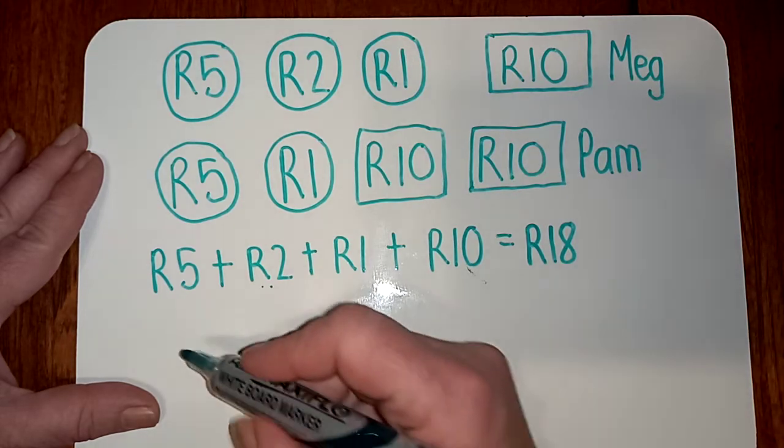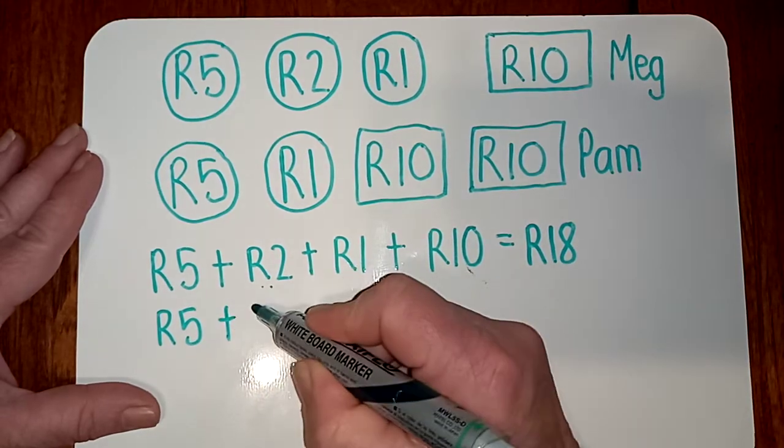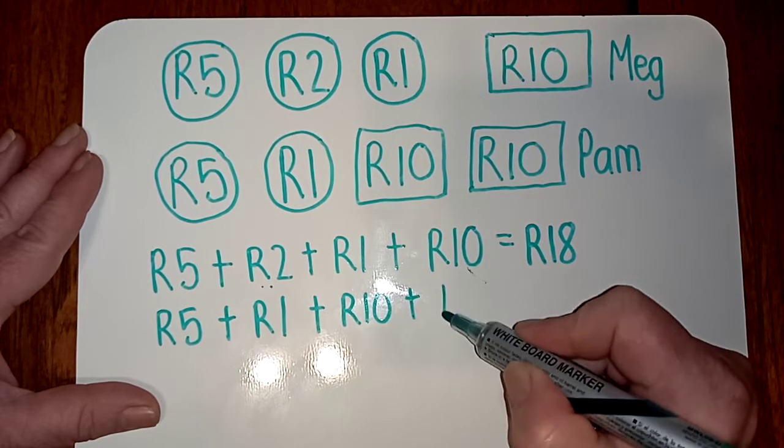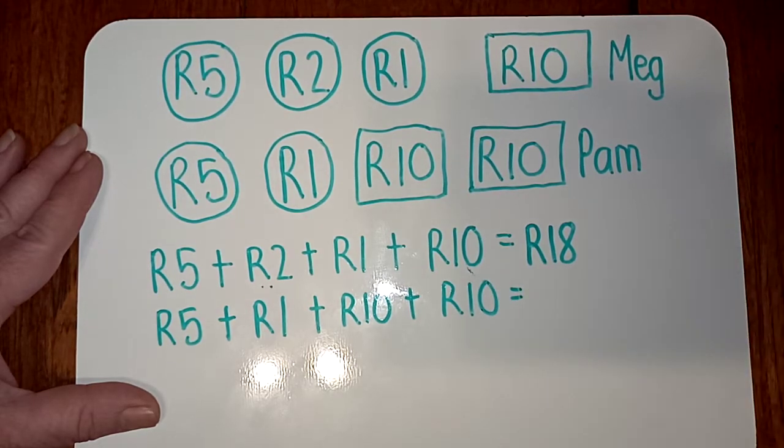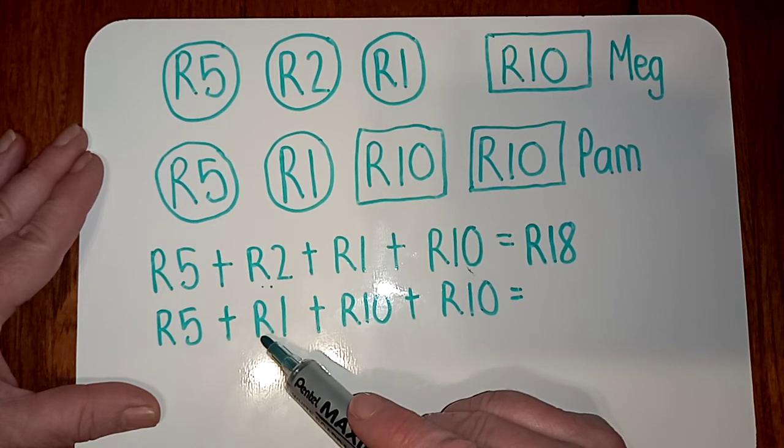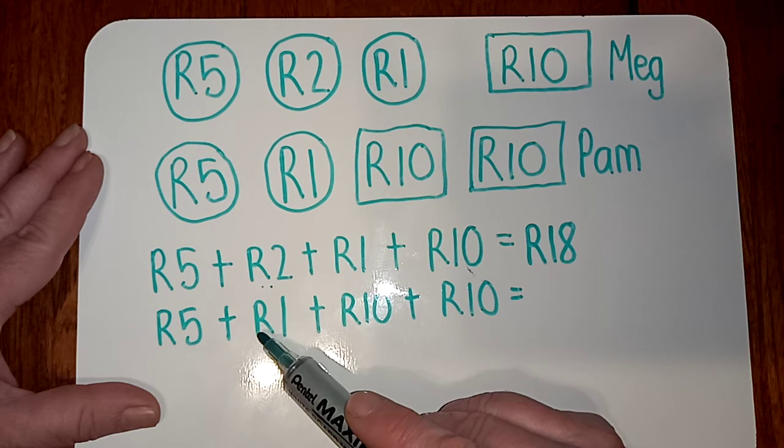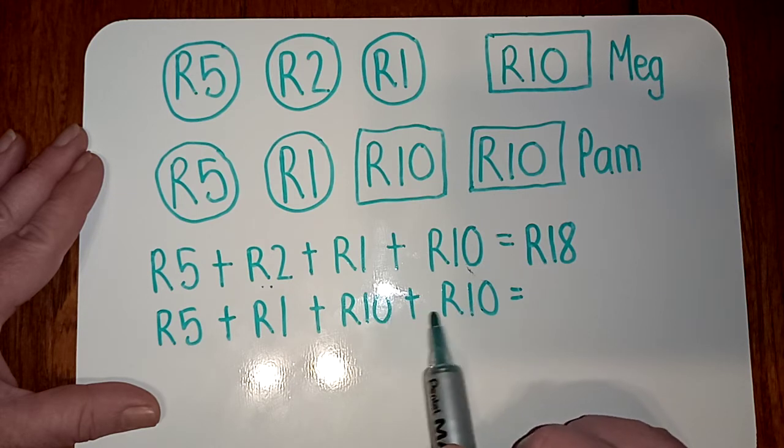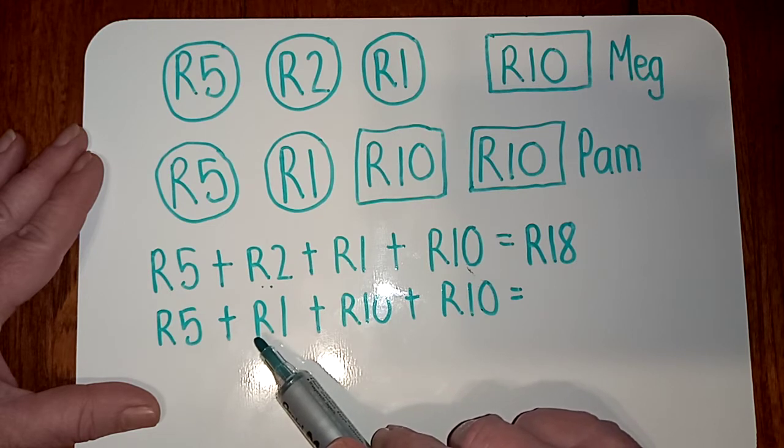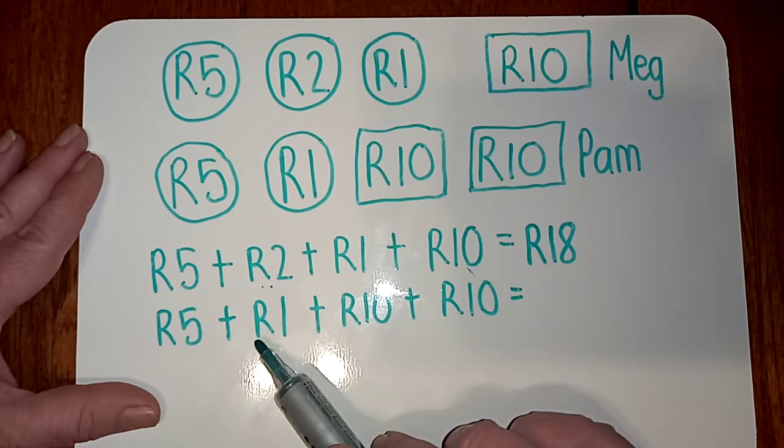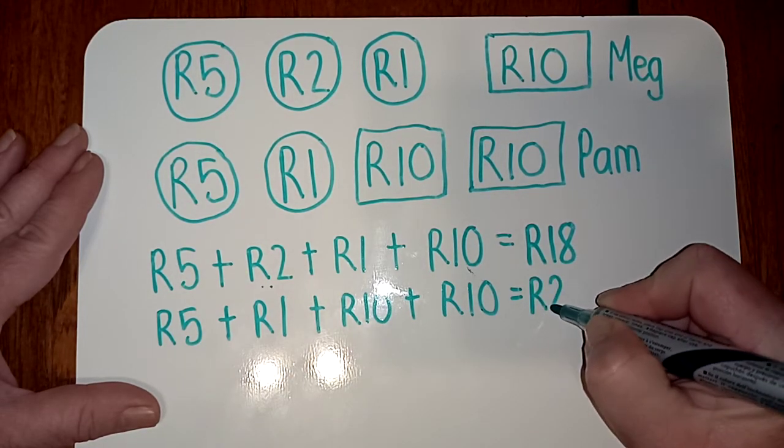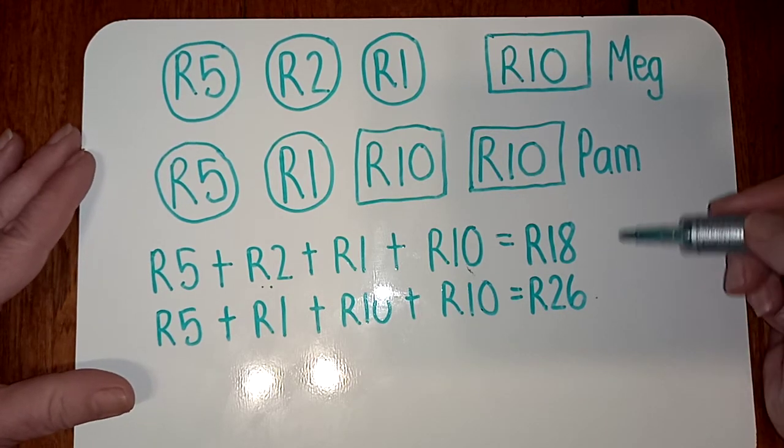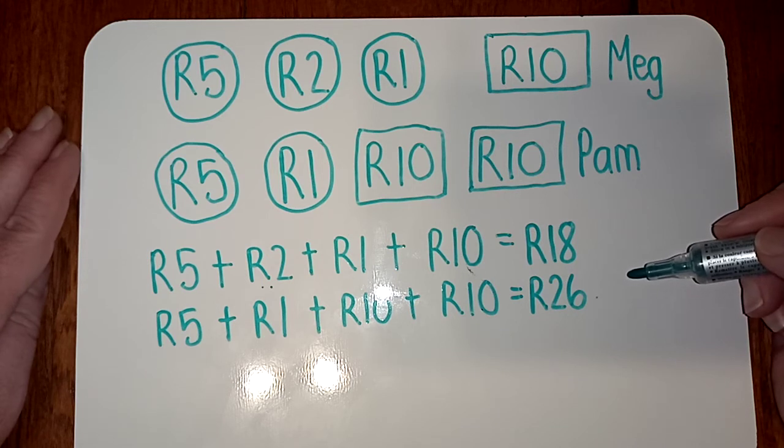Let's have a look at Pam. Five Rand plus one Rand, ten Rand and ten Rand. So five and one is six. So those are our units. And then we've got ten and ten is twenty. So what is twenty and six? It's just like we say it, like the tens and units. Twenty six. So it's twenty six Rand. So Pam is twenty six Rand and Meg has eighteen Rand. So you've answered the first part of the question. How much money does each girl have?